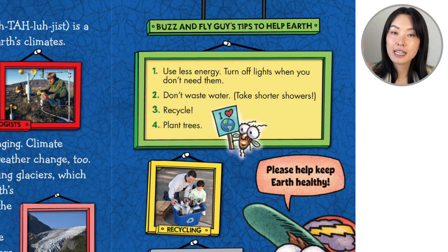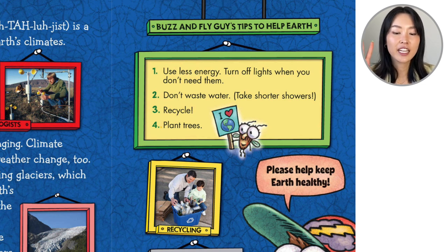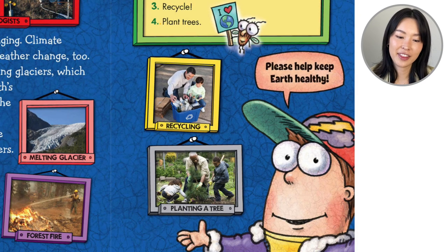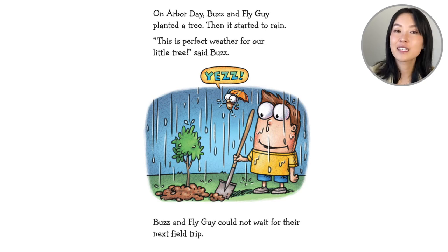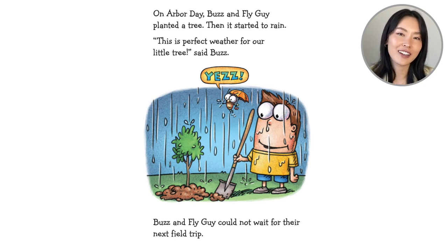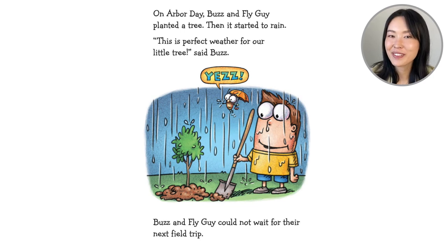Here are Buzz and Fly Guy's tips to help Earth. One: use less energy — turn off lights when you don't need them. Two: don't waste water — take shorter showers. Three: recycle. Four: plant trees. Please keep Earth healthy. On Arbor Day, Buzz and Fly Guy planted a tree, then it started to rain. This is perfect weather for our little tree, said Buzz. Yes, said Fly Guy. Buzz and Fly Guy can't wait for their next field trip. This is Fly Guy Presents Weather by Tedd Arnold. I learned so much — I hope you learned a lot with me. Thank you.